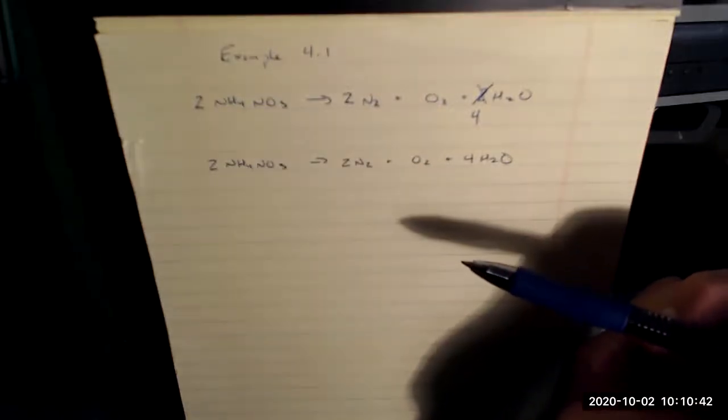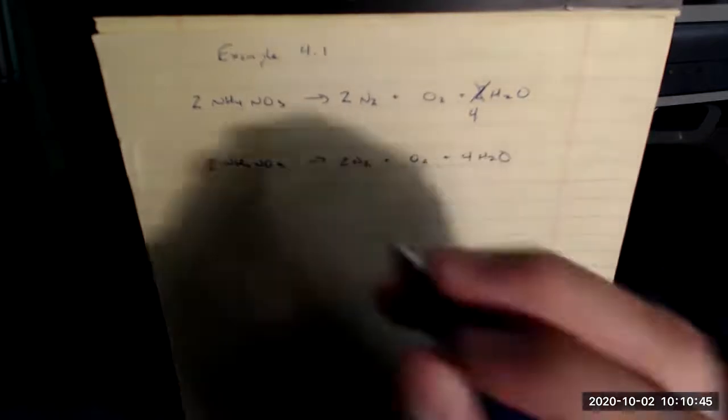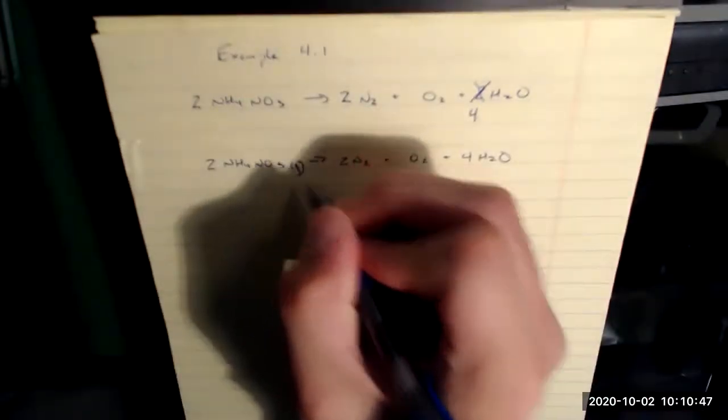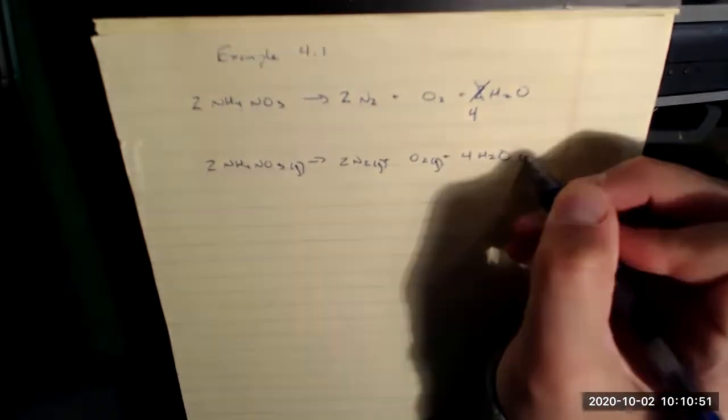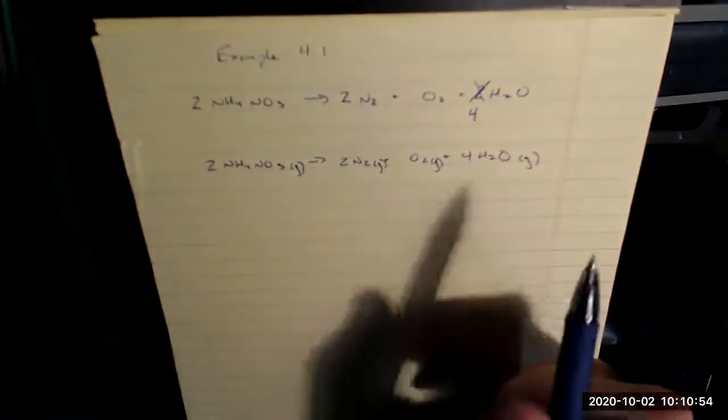But if I want to report this to receive full credit on a test, I always double check and make sure that I include physical states. I was told everything was a gas, so I write parentheses G after everything, and I'm done.